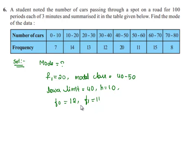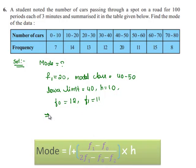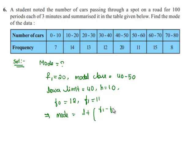Now, considering the formula, mode is equal to L plus within brackets F1 minus F0 by 2F1 minus F0 minus F2 into h.